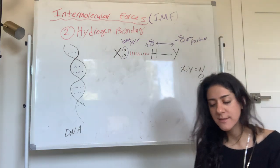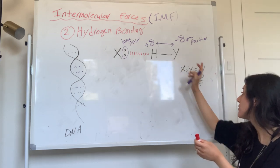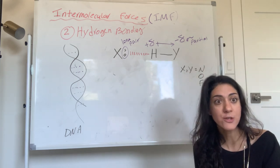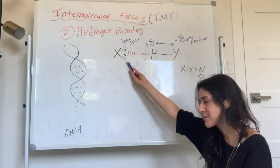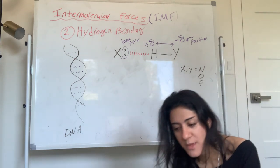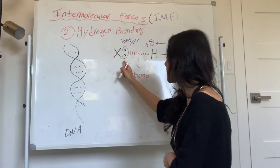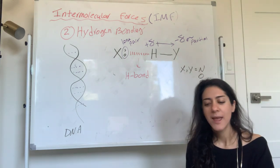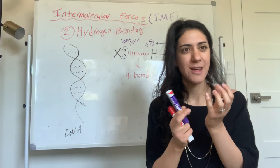Because this hydrogen has a partial positive, it's desperate for electrons. And guess who has electrons? The lone pair on the other nitrogen, oxygen, or fluorine. So there's a strong attraction: electron-deficient hydrogen is attracted to the lone pair. That is an H-bond. Even though we call it a hydrogen bond, it's not really a bond — it's an attraction. All intermolecular forces are attractions, not bonds.